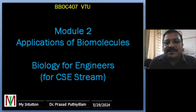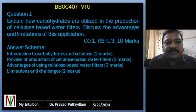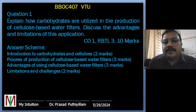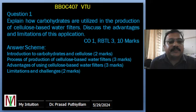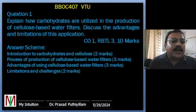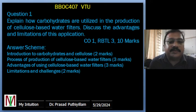Module 2: Applications of Biomolecules — Biology for Engineers for Computer Science and stream students. Question 1: Explain how carbohydrates are utilized in the production of cellulose-based water filters; discuss the advantages and limitations of this application. It is a Course Outcome 1 based question, Revised Bloom's Taxonomy Level 3, given for 10 marks. Mark distribution: introduction to carbohydrate/cellulose — 2 marks; process — 3 marks; advantages — 3 marks; limitations and challenges — 2 marks.